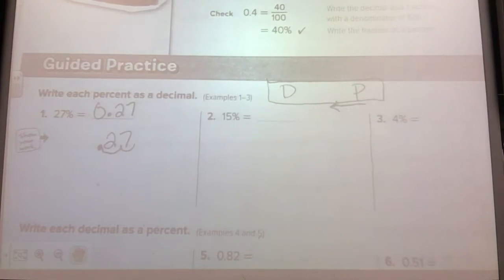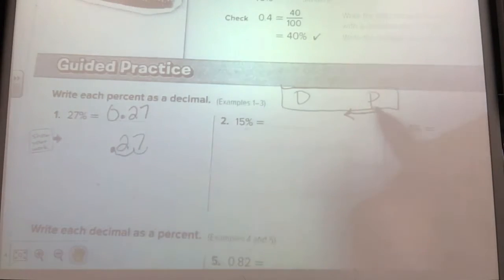Fifteen percent. Again, I have a percent. Right, fifteen. If it's a whole number you always start over here. One, two. Zero point one five.